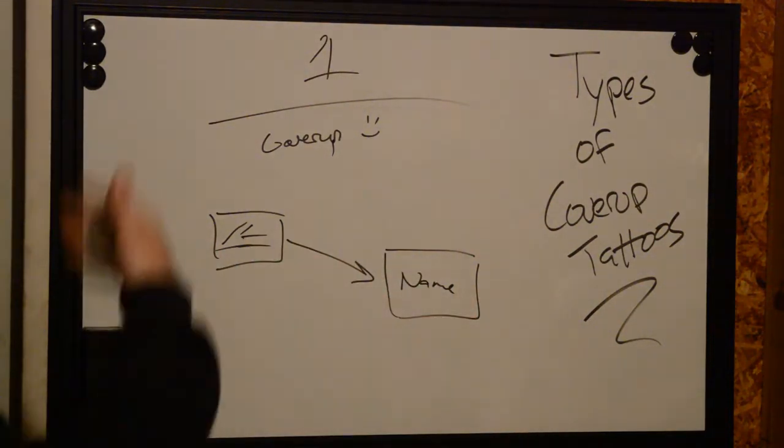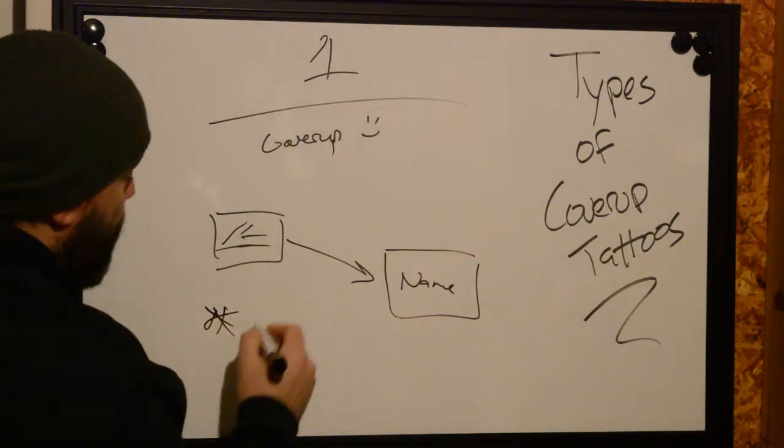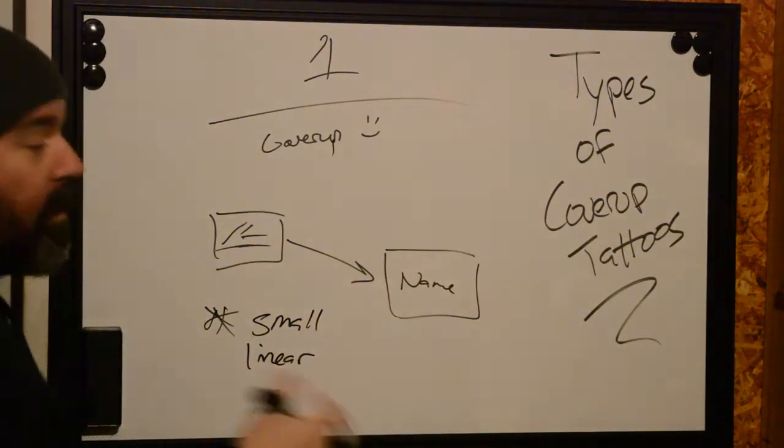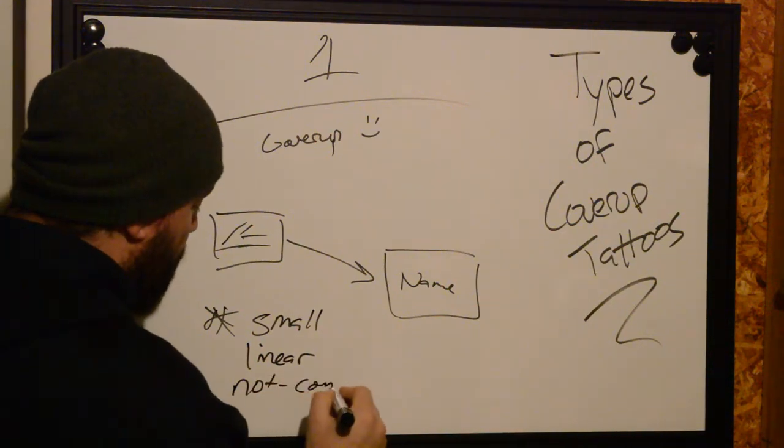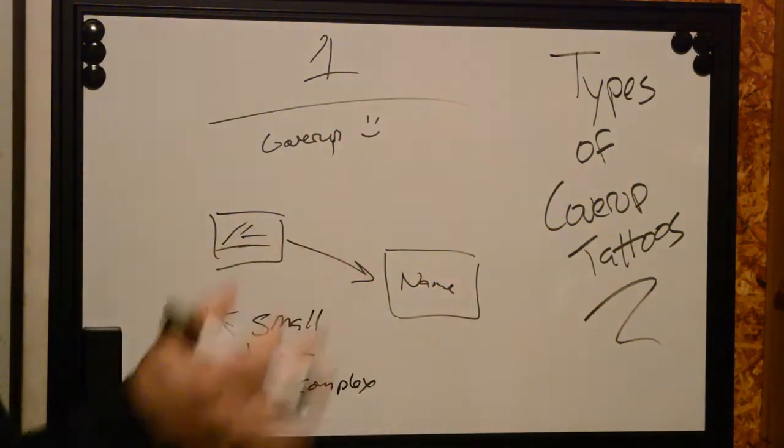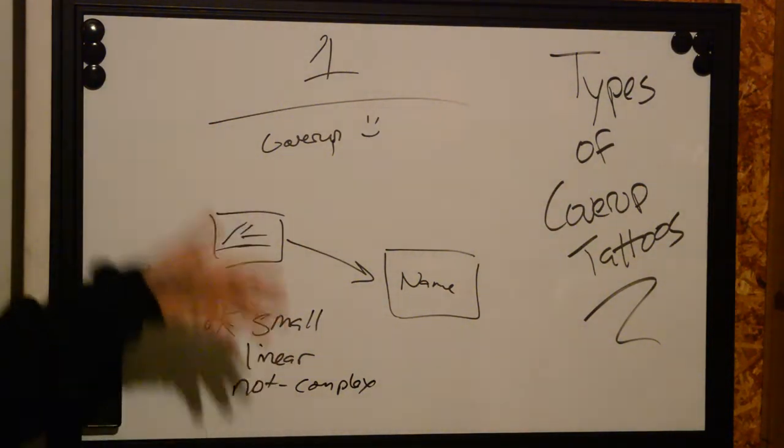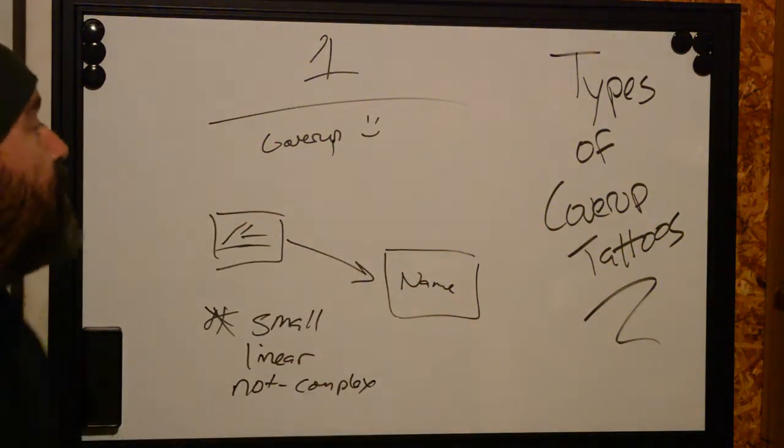So cover-ups usually are going to be stuck into a grouping where we have something that's small, has to be linear, or something that's not very complex. Not complex. Why is this? If we follow these rules, it's small, it's linear, and it's not complex. Doing a cover-up actually can be really effective and it's not difficult to approach that way.